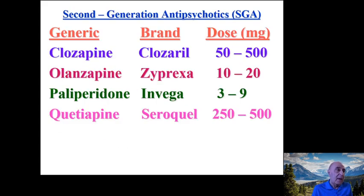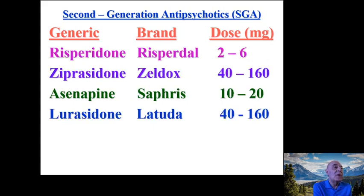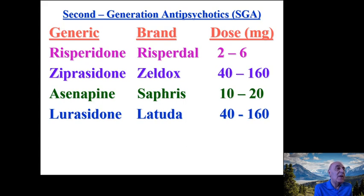The second-generation antipsychotics include clozapine (Clozaril), olanzapine (Zyprexa), paliperidone (Invega), quetiapine (Seroquel), risperidone (Risperdal), ziprasidone (Zeldox), asenapine (Saphris), and lurasidone (Latuda), each with a specific dose range.